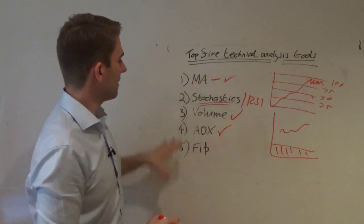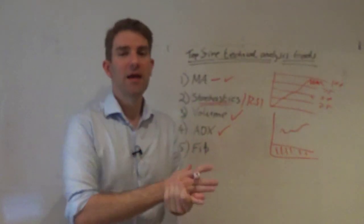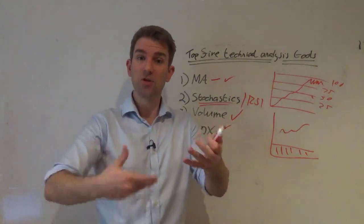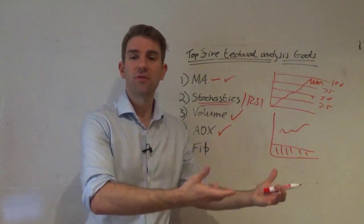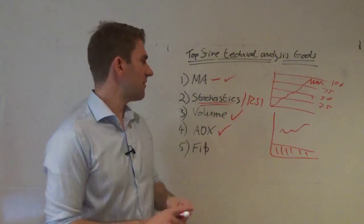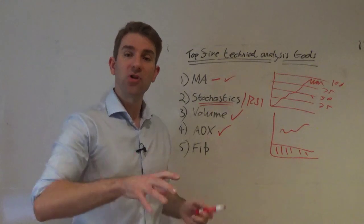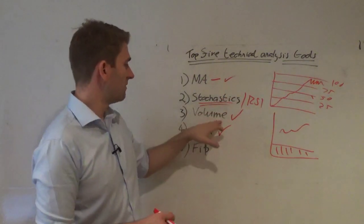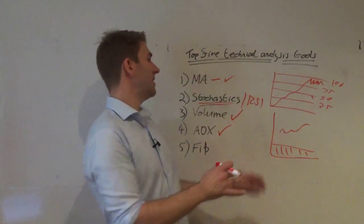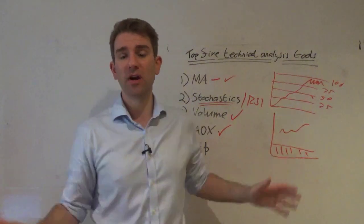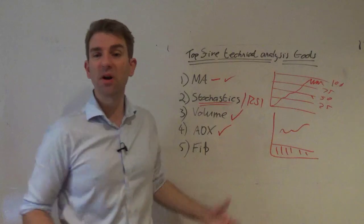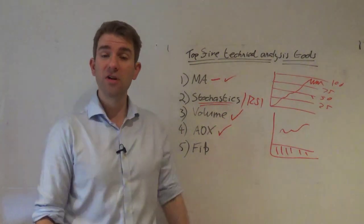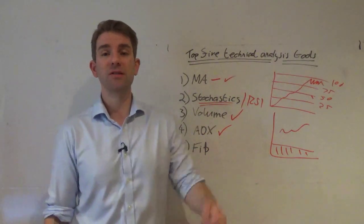Trading is a little broad like that — there's no definitive way to say I'll always use this indicator on this setting. You want to adapt, grow as a trader, and adjust to different market conditions. So the top five: moving averages, stochastics or an oscillator, volume, ADX, and Fibonacci retracement. Not a bad place to start if you're new to trading. You can swap ADX for Bollinger Bands if you prefer. Let me know your top five in the comments — agree, disagree, always interested to hear. Take care!